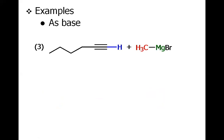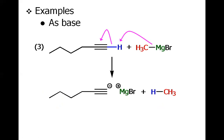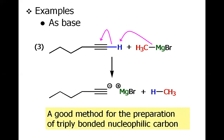More examples: the terminal alkynic hydrogen, called acetylenic hydrogen, is acidic in nature. When treated with an organometallic compound such as a Grignard reagent, it will be knocked off to afford methane and the alkynyl anion. This alkynyl anion is the conjugate base of the terminal alkyne. It is a good method for the preparation of a triply bonded nucleophilic carbon. When we treat this alkyne anion with different alkyl halides, we may have carbon chain extension, so it is of great synthetic utility.